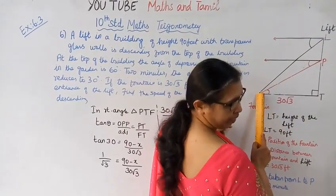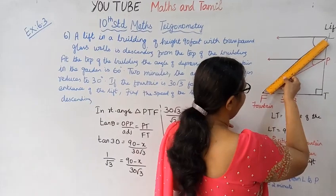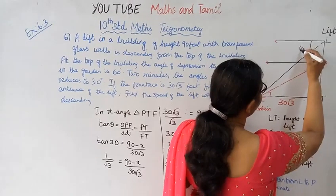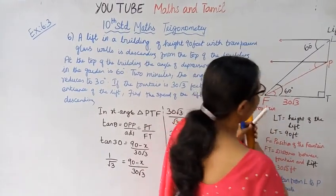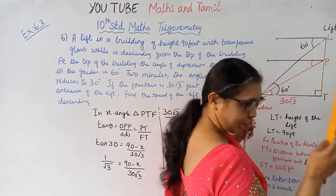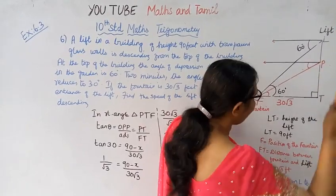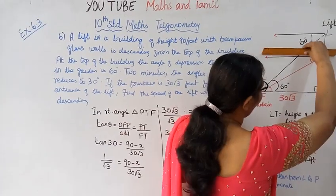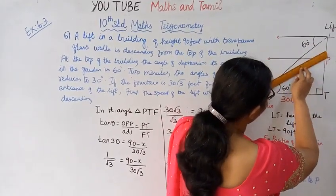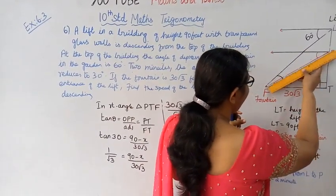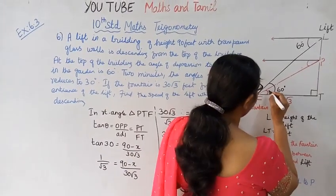The angle of depression from the top is 60 degrees initially. After descending for two minutes, the lift reaches a new position and the angle reduces to 30 degrees. I'll mark this in red color - the angle at the bottom position is 30 degrees.